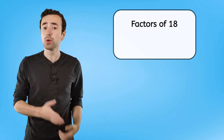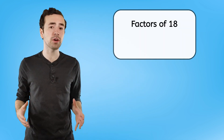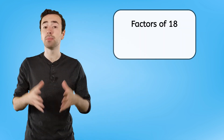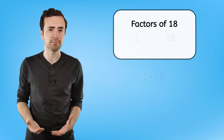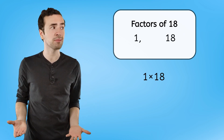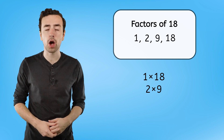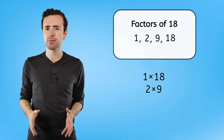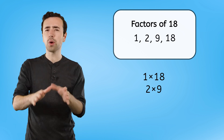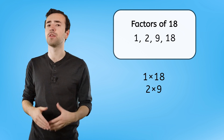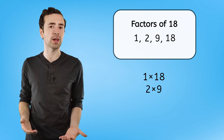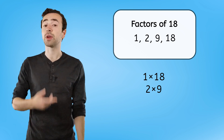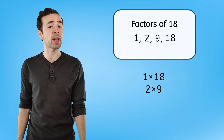Speaking of factors, let's review how to find all of the factors of a number. Let's use 18. We'll start by listing all the pairs of numbers that we can multiply to get 18. One times 18 and two times nine are factor pairs. If you aren't sure if a number is a factor of another number, you can always try dividing. If you get a whole number, you found another pair of factors.